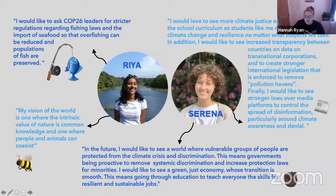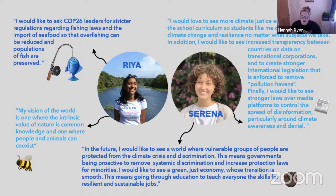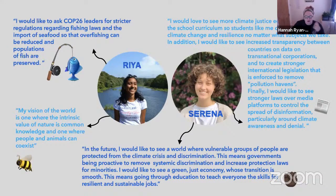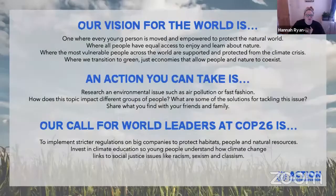Here are some examples from AFC ambassadors Ria and Serena. Ria wants a world where the intrinsic value of nature is common knowledge and where people and animals can coexist. Serena wants a world where governments are more proactive in removing systemic discrimination and increasing protection laws for minorities, as well as seeing a transition to a green and just economy. She'd also love to see climate justice and climate change embedded in the curriculum.